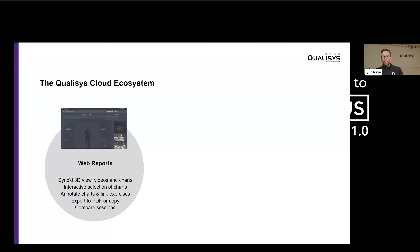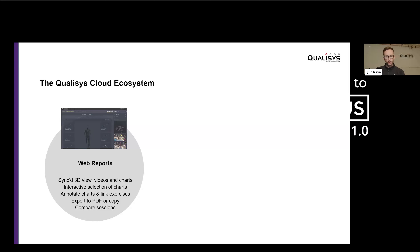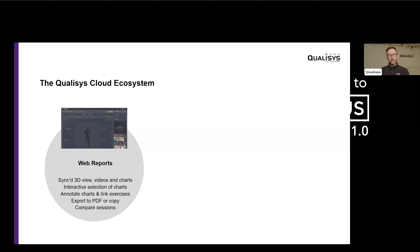The Qualisys cloud ecosystem: at Qualisys we try to be innovative, and we saw the cloud being used a lot in our daily lives. We felt like in biomechanics, the cloud can have a lot of benefits. A few years ago, we started to develop web reports — the first component of the cloud ecosystem. This web report contains all the different metrics and graphs as output of your analysis, with all graphs, tables, videos, and charts synced together.